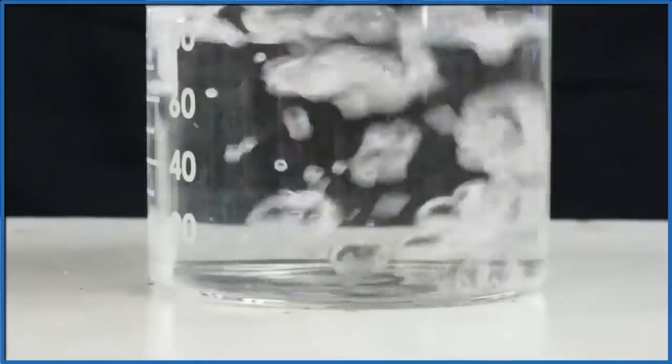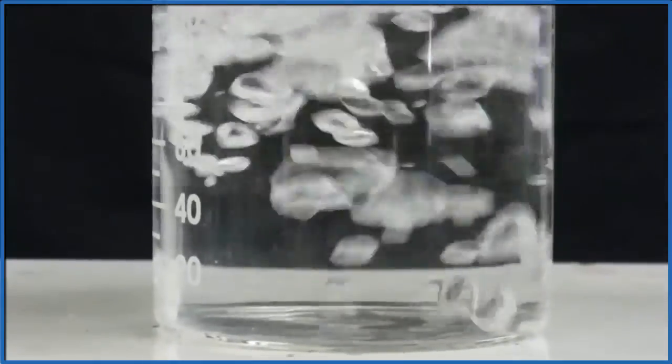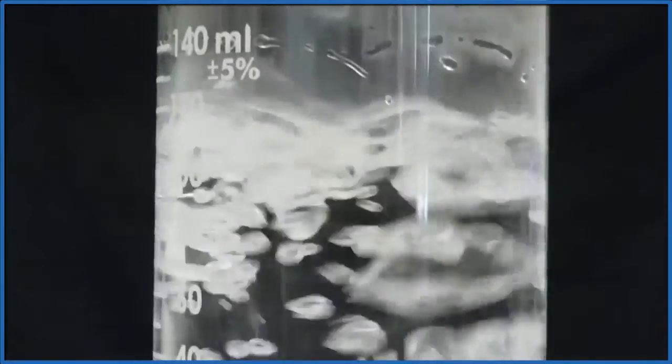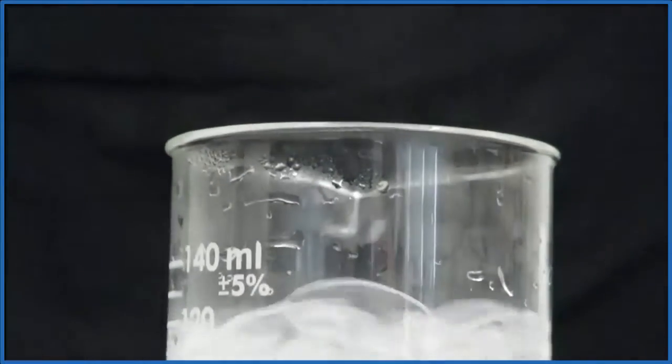So as we add heat to water, the water molecules begin moving faster, and some of them spread out and form a gas. We call that gas water vapor, and that's what's inside the bubbles you see. These bubbles rise to the surface, and this is what we call boiling.